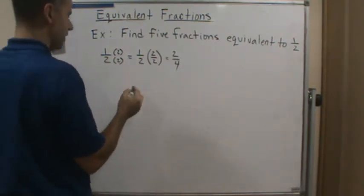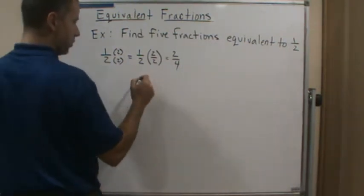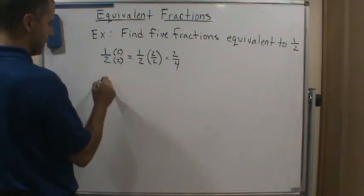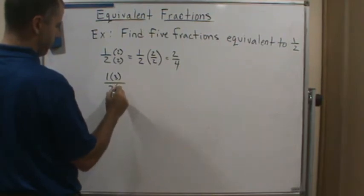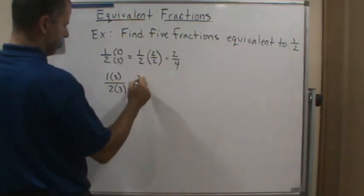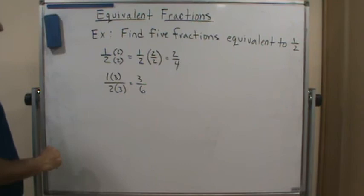Okay, let's continue. Okay, so we've got 2 fourths. What about if we multiply the top and the bottom by 3? Let's do it. That's going to give us 3 sixths. There's another one.